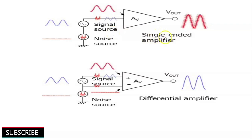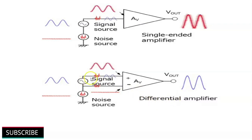In a single-ended amplifier, any unwanted noise at the input will be amplified along with the input signal, generating huge noise or distortion at the output. While in a differential amplifier, the noise is common to both inputs — it becomes a common mode signal — and the differential amplifier rejects or does not amplify the common mode noise signal. It only amplifies the differential input signal, so we get an undistorted and amplified output signal.